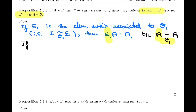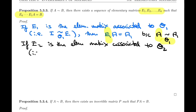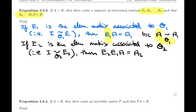The same way, E2 is the elementary matrix associated to O2 — meaning if you start from I and apply O2, you get E2. Then E2 times E1 times A gives A2. In the notation above, A1 becomes A2 once we apply O2. Applying O2 to A1 is the same as left-multiplying by E2, and that E1·A is precisely our A1. So E2·(E1·A) equals A2.